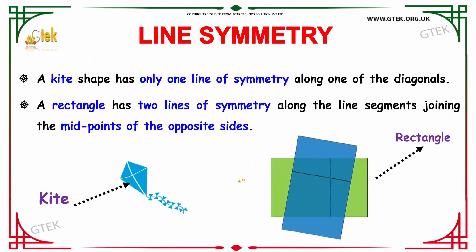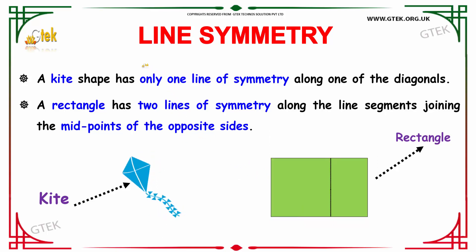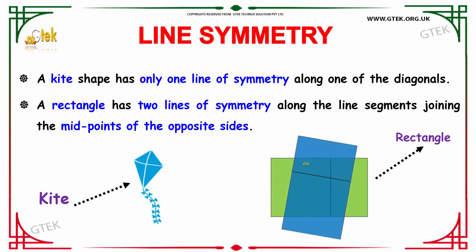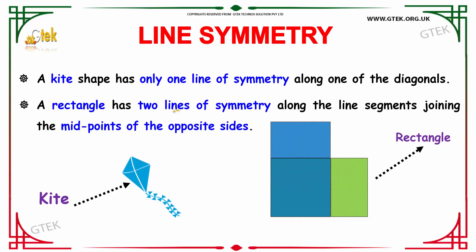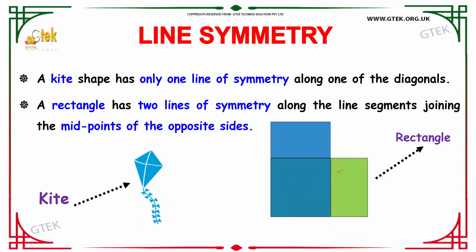Next, we are going to study about the kite. A kite is a shape which has only one line of symmetry, which is along its diagonal. About the symmetrical axis, your kite has similar dimensions on both sides. Whereas a rectangle has two lines of symmetry, along the line segments joining the midpoints of the opposite sides.